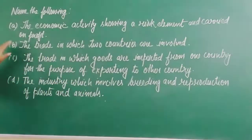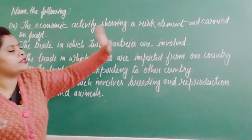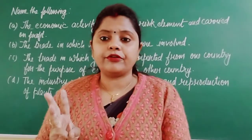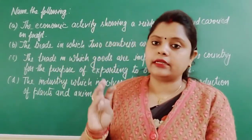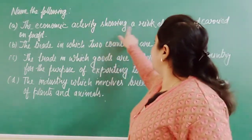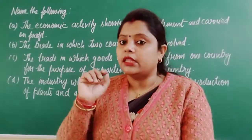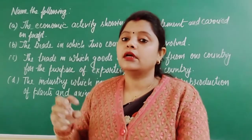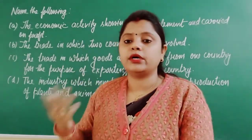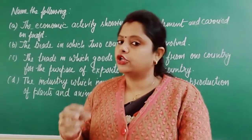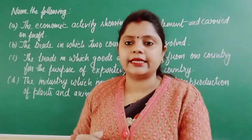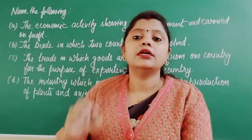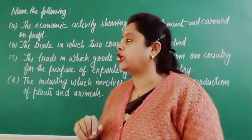The first clue: an economic activity showing a risk element and carried on for profit. If you remember, there are three types of economic activity: business, profession, and employment. Now, 'showing a risk element' means risk is present. Employment has the least risk — whether the company earns profit or loss, if we are working in any organization we get a fixed salary. So we can say almost no risk is there. In profession, a little bit of risk is there, but in business, risk depends on the nature and size of the business.